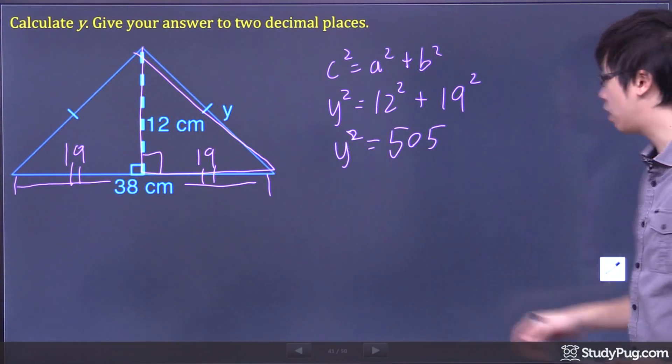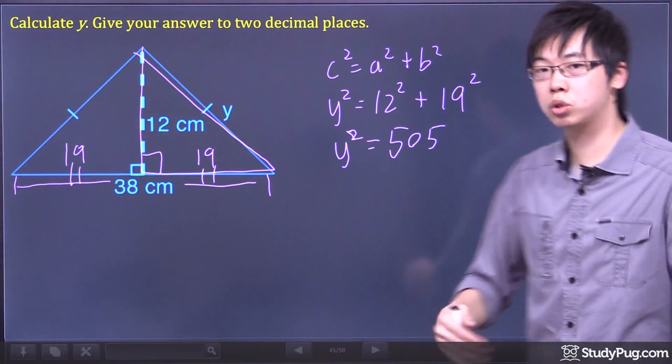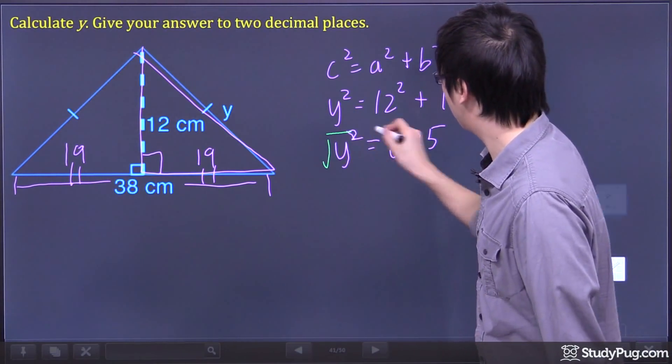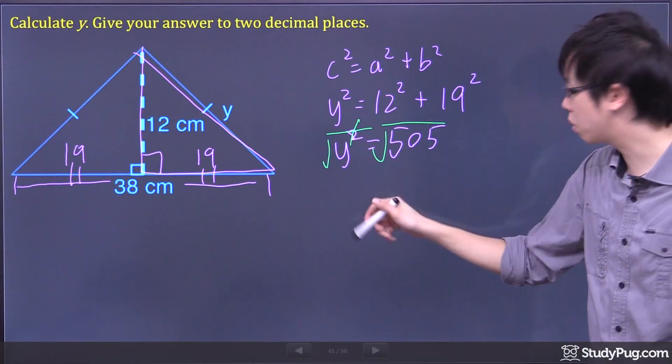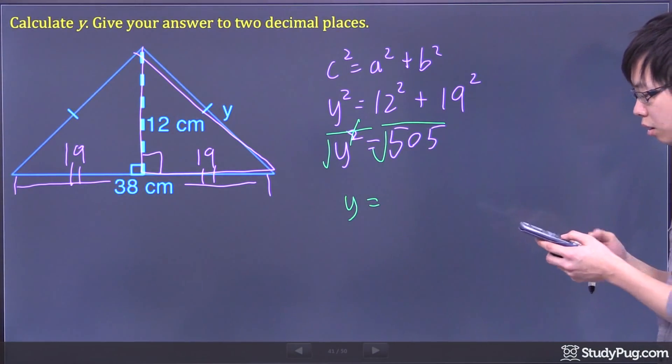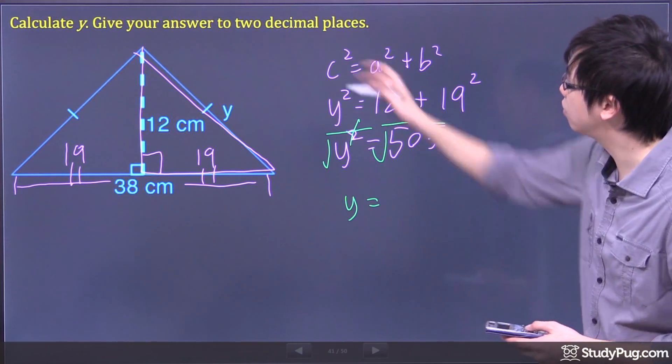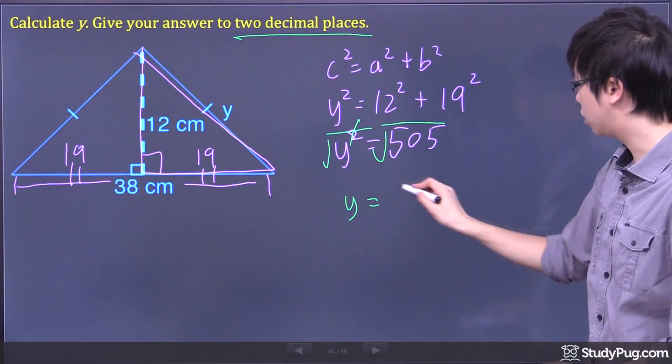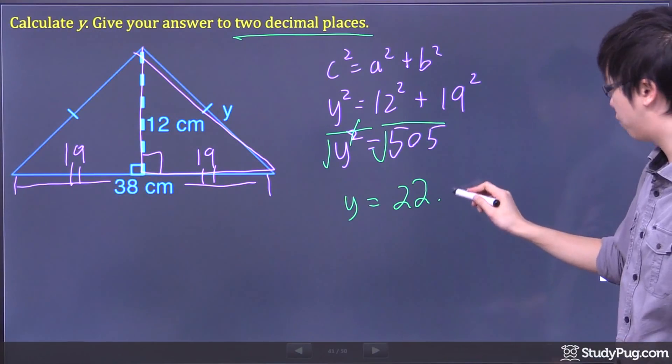Now, to solve for Y, you will have to square root both sides, because this allows you to cancel the square sign right there. Then you can solve Y equals to square root of 505. Two decimal places, I got 22.47.